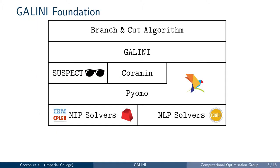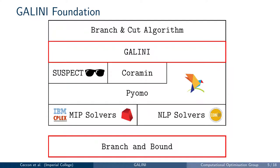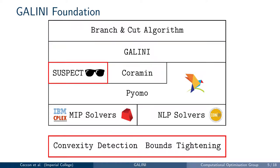The focus of this presentation is Galini and its extensible branch and cut algorithm, developed on top of the generic branch and bound code. This work would not have been possible without the Python optimization software community, since Galini uses several libraries. We use SUSPECT, also developed by our group, to perform feasibility-based bound tightening and convexity detection.